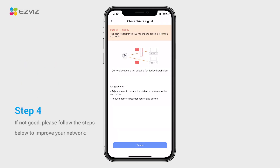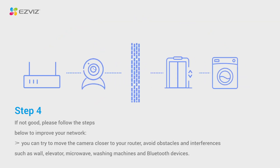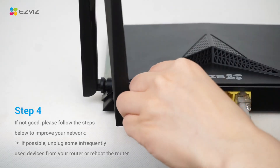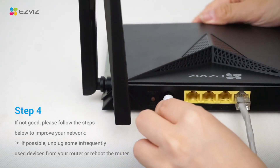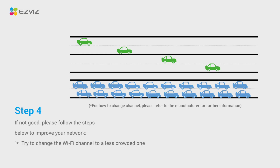Step 4: If the signal is not good, follow these steps to improve your network. Try moving the camera closer to your router. Avoid obstacles and interference such as walls, elevators, microwaves, washing machines, and Bluetooth devices. If possible, unplug infrequently used devices from your router, or reboot the router. You can also try changing the Wi-Fi channel to a less crowded one.